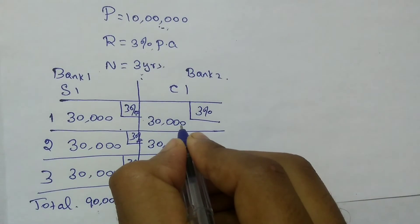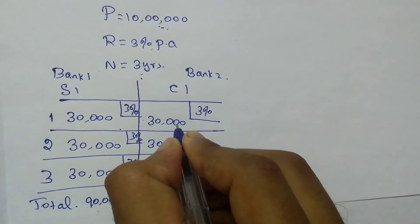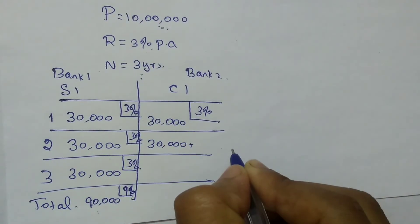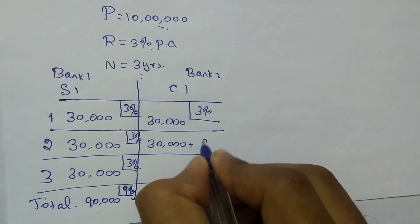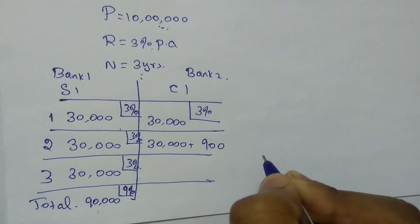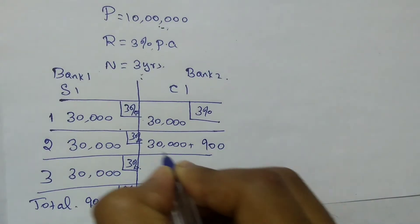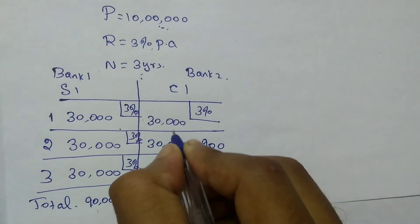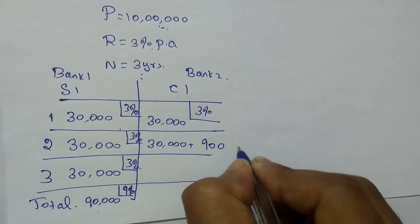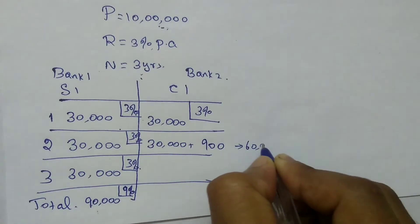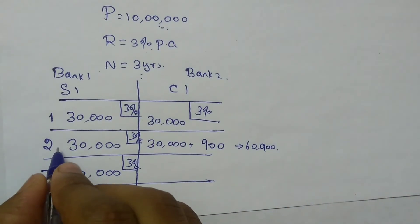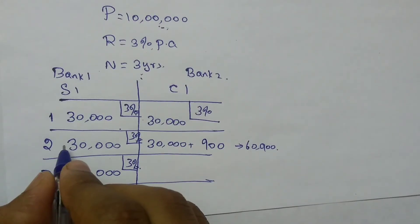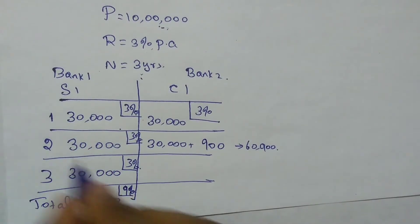Already at the end of the first year you owed 30,000 rupees, so the bank will impose another 3% on that 30,000, which is 900 rupees. So if you plan to settle the total interest at the end of two years, you have to pay 30,000 + 30,000 + 900 = 60,900. But in simple interest, it is sufficient to pay only 30,000 + 30,000 = 60,000 rupees.